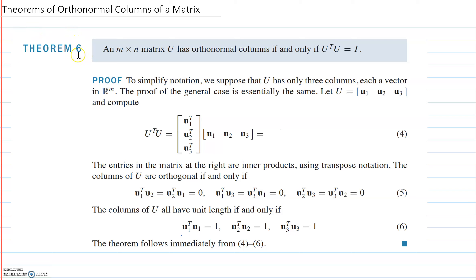The first theorem we're going to talk about is Theorem 6, which says if you have an n-by-n matrix U, the columns of this matrix are orthonormal if and only if the transpose of U times U is the identity matrix.